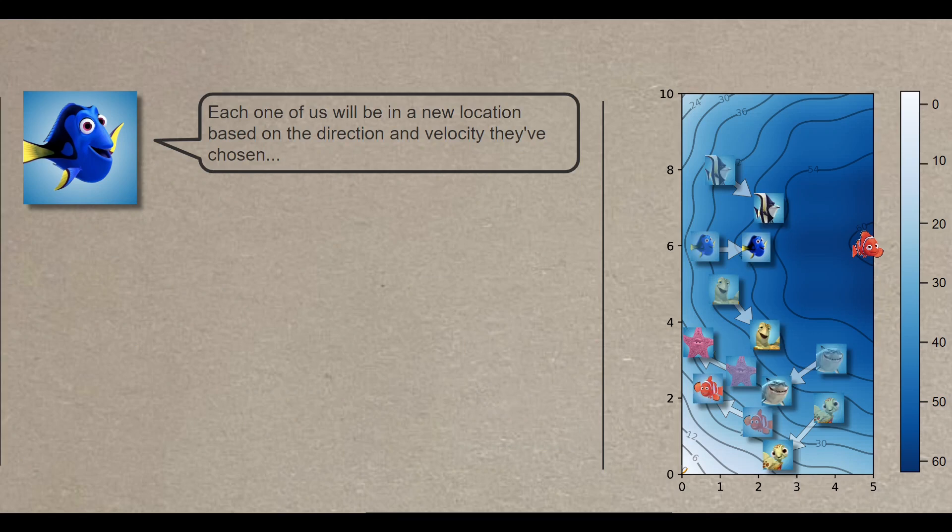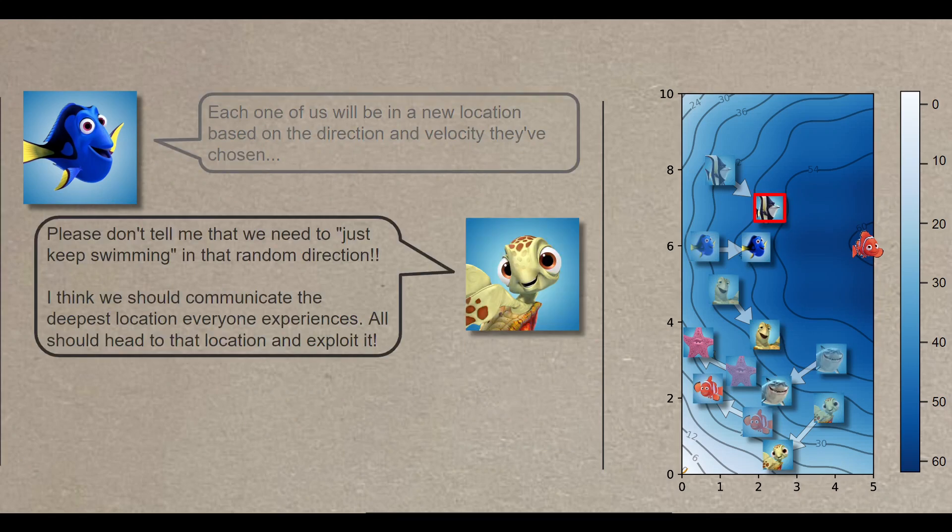Everyone will choose a random direction and speed too. Each one of us will be in a new location based on the direction and velocity they've chosen. Please don't tell me that we need just to keep swimming in that random direction. I think we should communicate the deepest location everyone experiences, aka the best location, and all should head to that location and exploit it.